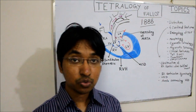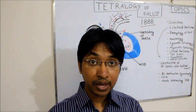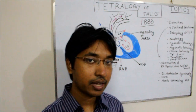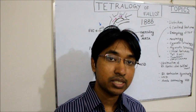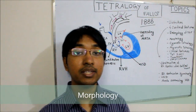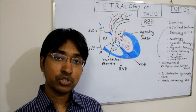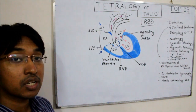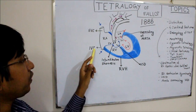Now that we have discussed the embryology, we will explain all four abnormalities. To understand the morphology of Tetralogy of Fallot, I have drawn an image of a simplified heart. Let's first recall the physiology of the heart. This is the right atrium. Venous blood enters the right atrium via the superior vena cava and inferior vena cava.